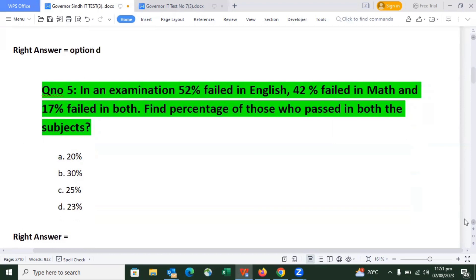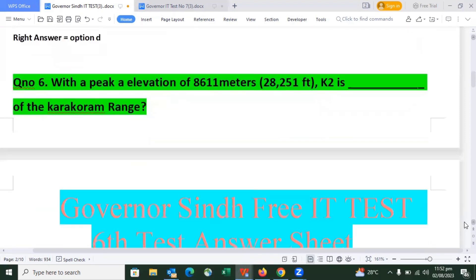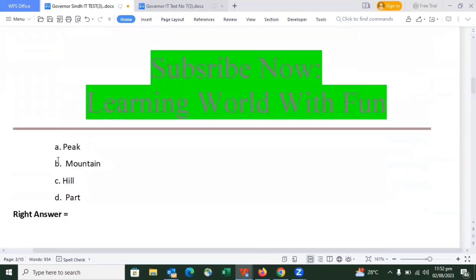In an examination, 42% failed in English, 42% failed in math, and 17% failed in both. 5% passed in both these subjects. This is the right answer of the question, and option number 3 is the right answer.